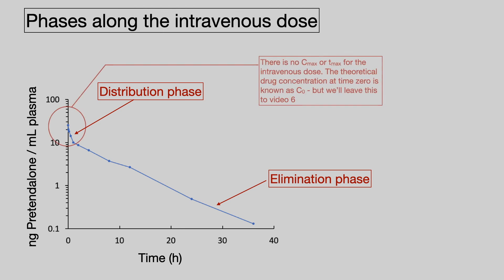For the intravenous dose, there is no C-max or T-max. The theoretical drug concentration at time zero is known as C-zero, but there are all sorts of complexities around that, so we're going to leave this to video six.